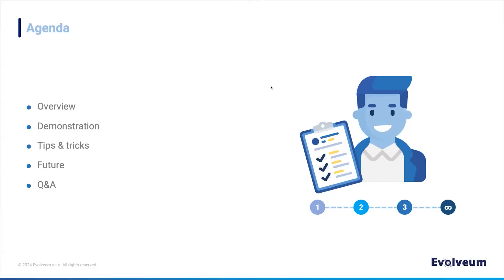Let's go through the agenda. It's pretty short and hopefully we won't spend too much time on slides. First I'll go through an overview of what we've done and how MidPoint can be upgraded with a little help from Ninja. Then we'll do a bunch of demos showing how Ninja can be used during the upgrade procedure, followed by tips and tricks, the future of Ninja and tooling around MidPoint, and we'll close with Q&A.